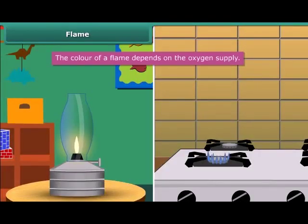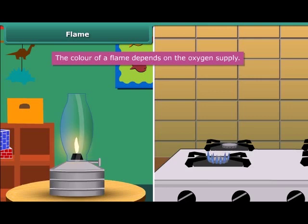When we look at a flame of a kerosene lamp, it is yellow in color, but the flame of a kitchen stove is blue. The color of a flame depends on the oxygen supply. If the oxygen supply is less, the flame will appear yellow due to incomplete combustion of fuel. And if it is more, the flame will appear blue due to complete combustion of fuel.